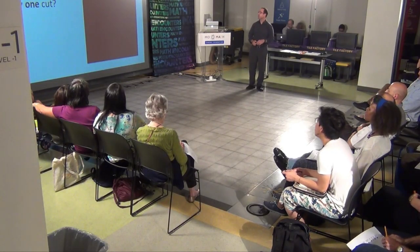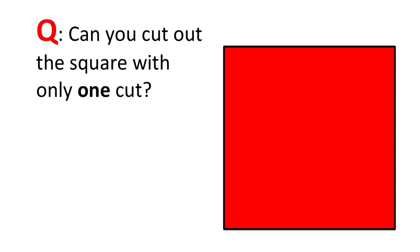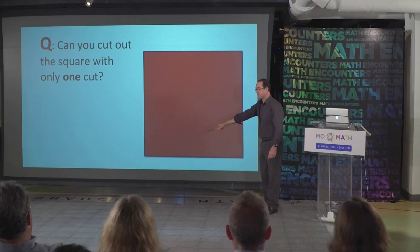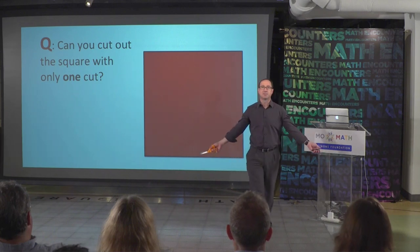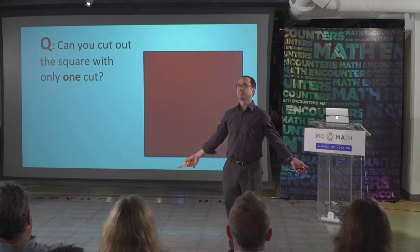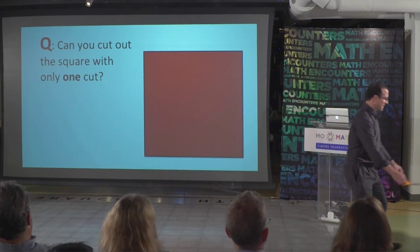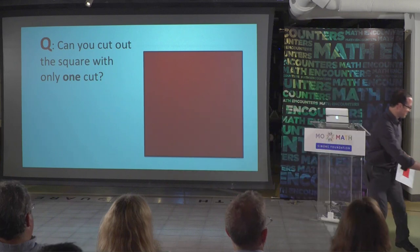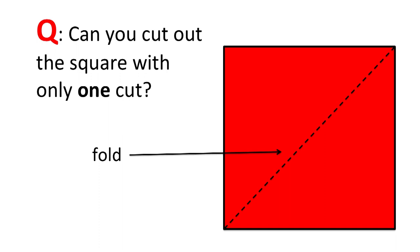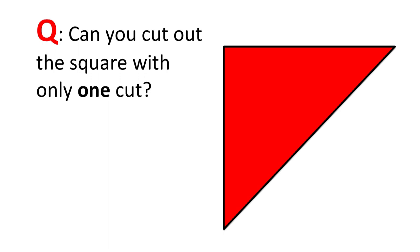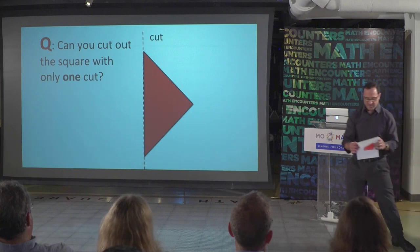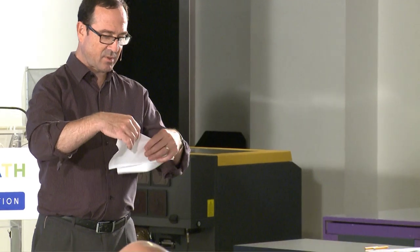Can you cut out the square with only one cut? Of course you can take your scissors and make four cuts going around, but I want to do it with just one cut. How am I supposed to do this with only one cut? I need to fold. So I've done some pre-folding so I don't mess this up. Here's our square. Let me describe it on the video first. So let's do a fold across this diagonal, and that takes us here. And then let's do another fold, and that takes us here. And then we will do our cut like that.